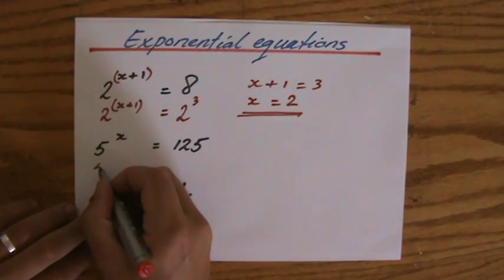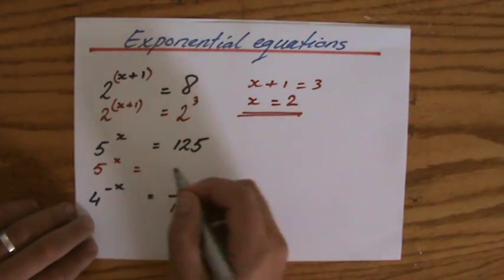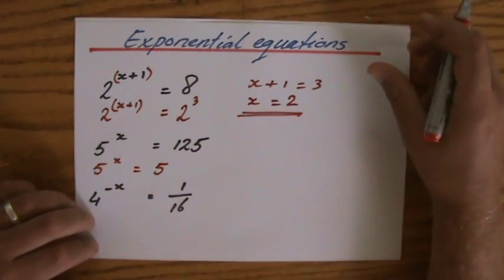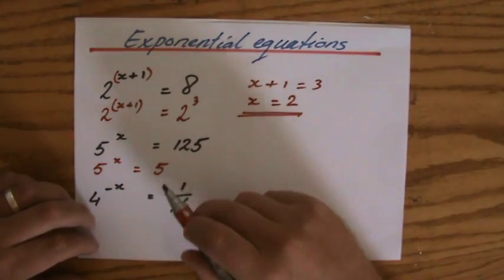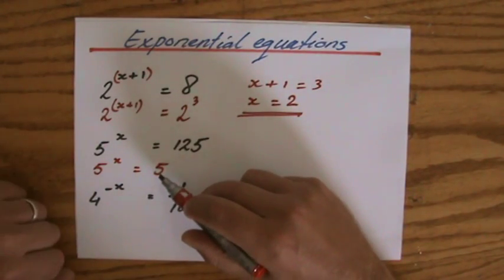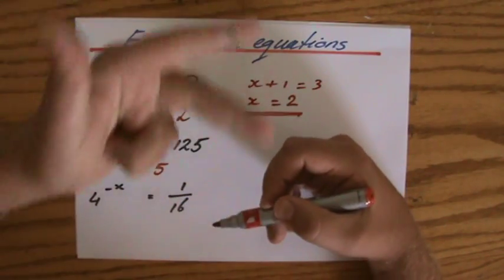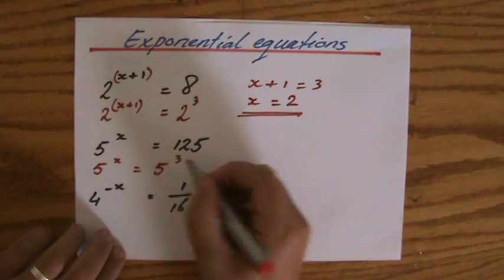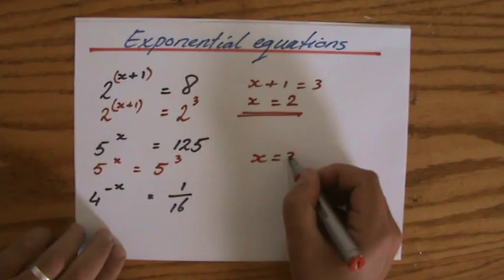Next one, 5 to the power x equals 125. And I know that I have to rewrite that as something of 5 to the power, because the bases have to be the same. 5, 25, 125. So 3. The answer then, therefore, x equals 3.